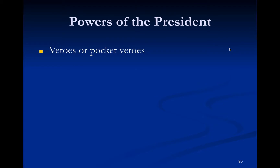The president is allowed to veto legislation. He can also pocket veto legislation, both of which are in the Constitution. But the president's most important power is being good at bargaining and persuading. The president really can't do much without the consent of Congress, so he needs to bargain and persuade, bring people together, and force compromises.